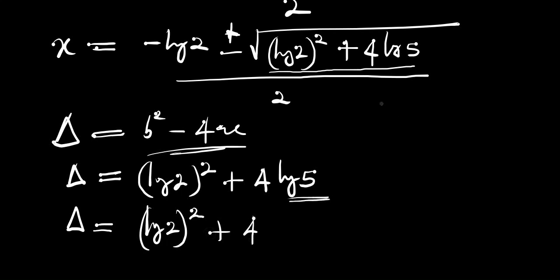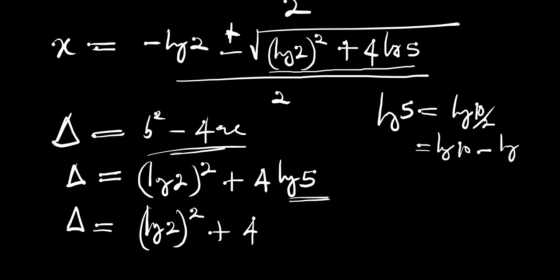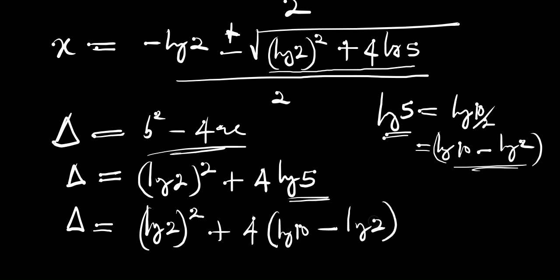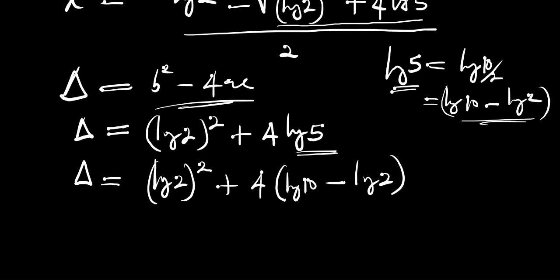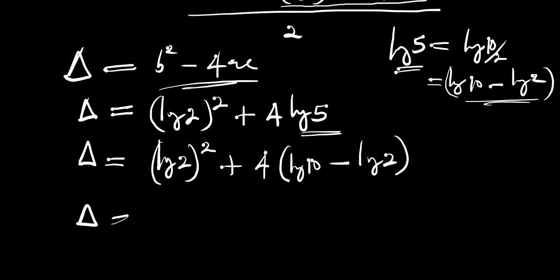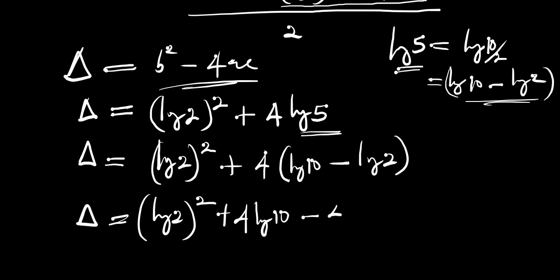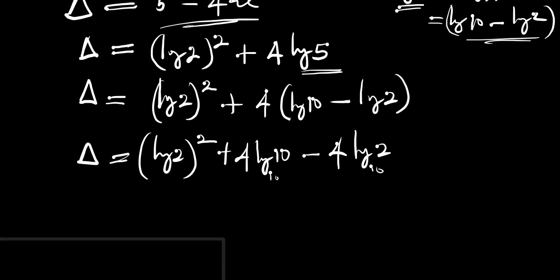Instead of log of 5, we can write log of 5 as log of 10 divided by 2, which equals log of 10 minus log of 2. So the discriminant becomes log of 2 squared plus 4 times (log of 10 minus log of 2). Since all logs are base 10, log of 10 equals 1, so 4 times log of 10 equals 4.